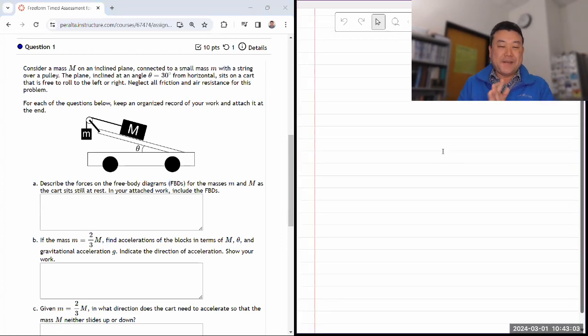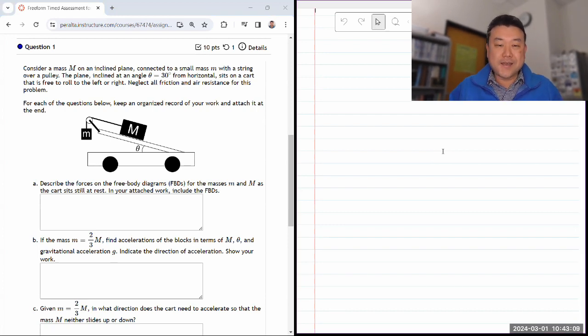So this question says, consider a mass M on an inclined plane connected to a small mass m with a string. They are giving me an angle theta of the horizontal. Describe the forces on the free body diagram for the masses M and m as the car sits still at rest. So that means it's at zero acceleration.